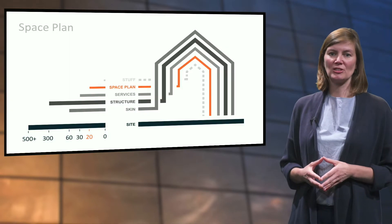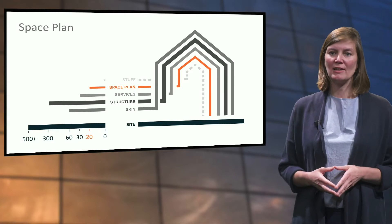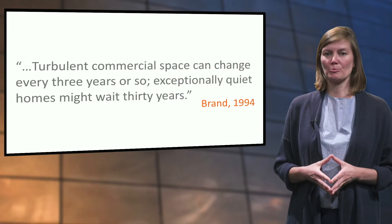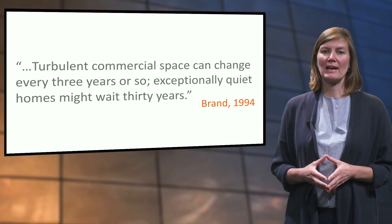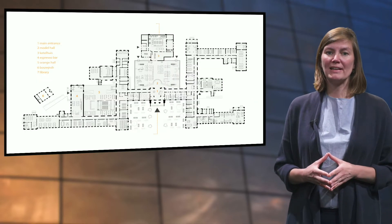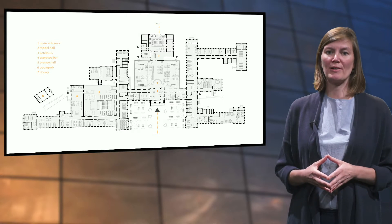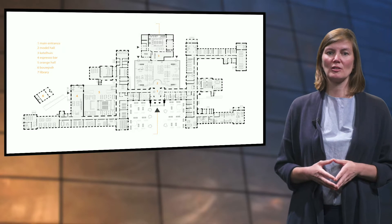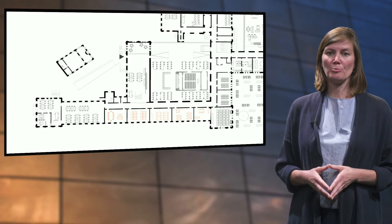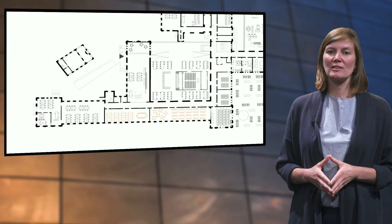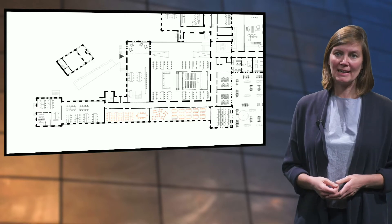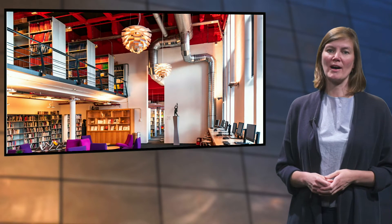The fifth layer consists of the space plan, which represents the interior layout of a building and includes walls, floors, doors, etc. Turbulent commercial space can change every 3 years or so; exceptionally quiet homes might wait 30 years. In the case of BK City, the biggest challenge was to create education rooms with varying sizes to accommodate different groups of students. The structure fortunately allowed combining classrooms by leaving out non-load-bearing division walls. A great example of space plan transformation is the BK City Library — by taking out all the division walls and ceilings, a generous double-high space was created.